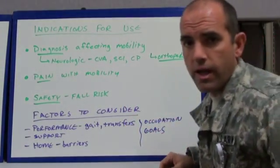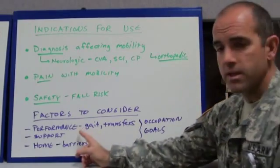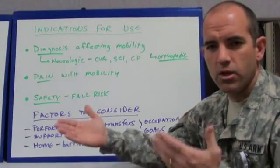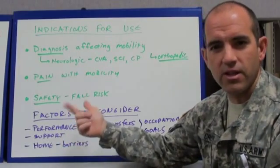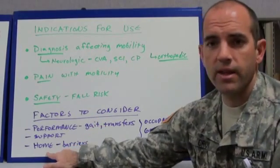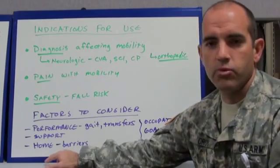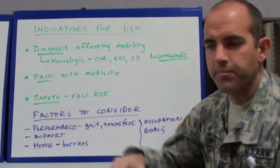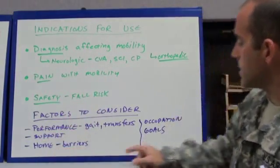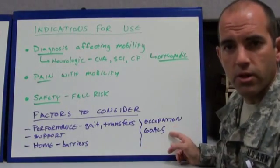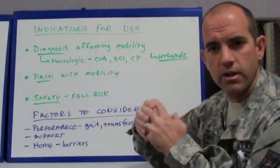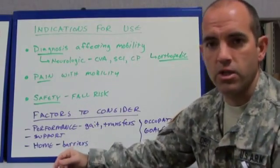Some factors you're going to have to consider: their performance. As you watch them walk and transfer, you see their base of support and evaluate how they do to determine their safety, their level of independence, and the type of assistance you could give them. Also, what's in their home — whether it be stairs, rugs, carpeting, or steps. You'll need to ask your patient and talk to their family. Also, their occupation as well as their goals — what is it that they do and what do they want to do? These are all things you'll put together to make a good decision on what to provide for your patient.